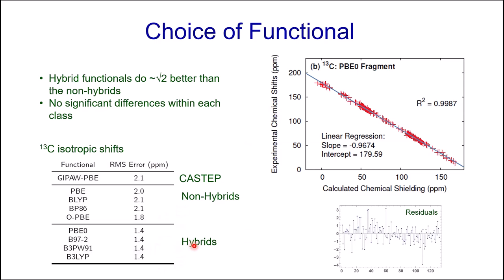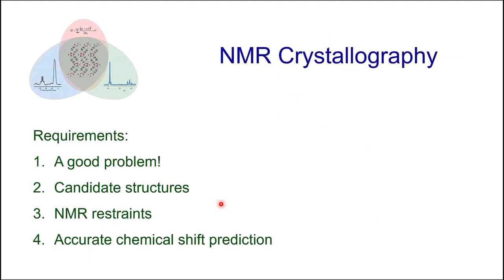Within the hybrid sets, all functionals are roughly equivalent. A lot of journal article ink has been used arguing about whose functional is better, but from the standpoint of chemical shifts the differences are all washed out by linear rescaling. This is probably not the case for calculating EFG tensors, but for NMR chemical shifts, if you're doing a priori linear rescaling these all work equally well for hybrids and they're a little better than non-hybrids. That's requirement four — accurate chemical shift prediction.